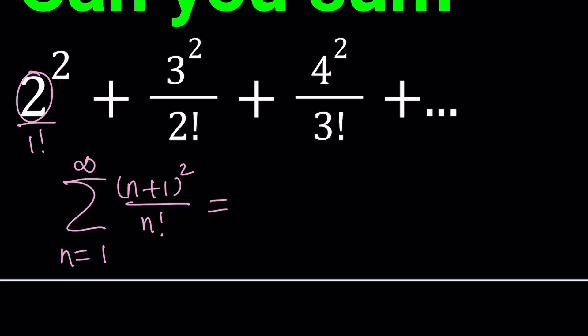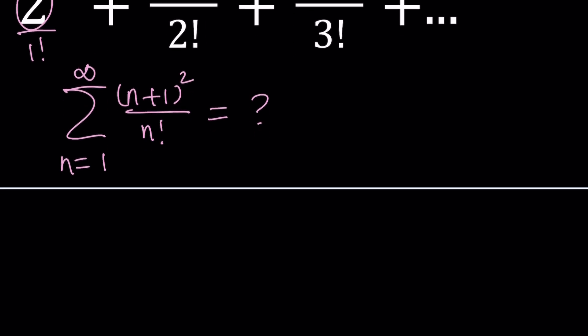Let's go ahead and find out what this sum equals. The first step is breaking down the numerator — in other words, expanding (n+1) squared. That gives us n squared plus 2n plus 1, all divided by n factorial, summed from n equals 1 to infinity.